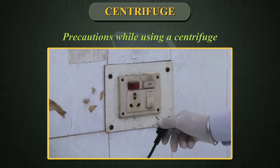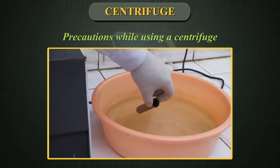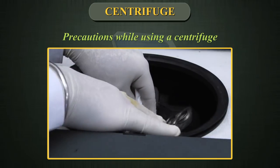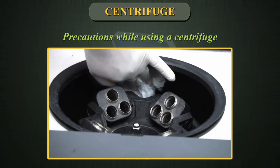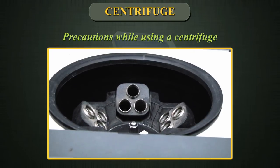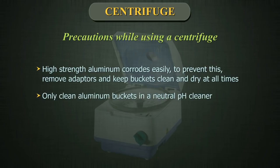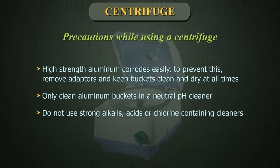Turn off the centrifuge and remove the plug from the wall socket at the end of each day's work. Open safety buckets or rotors preferably in a biological safety cabinet. If spills or leakage are apparent, clean the rotor with a mild detergent, rinse thoroughly with distilled water, and allow to dry completely. High-strength aluminium corrodes easily; keep buckets clean and dry at all times and only clean aluminium buckets with a neutral pH cleaner. Do not use strong alkalis, acids, or chlorine-containing cleaners.